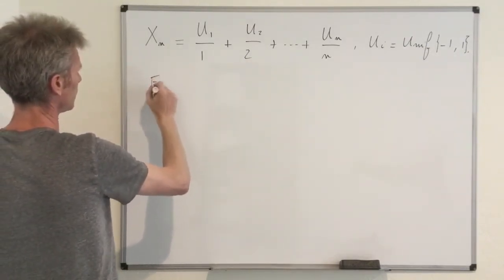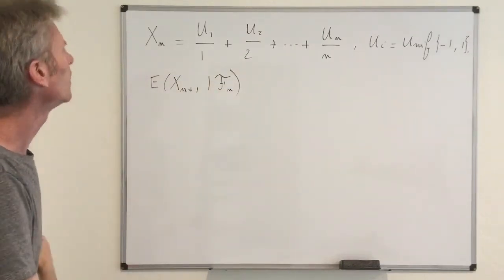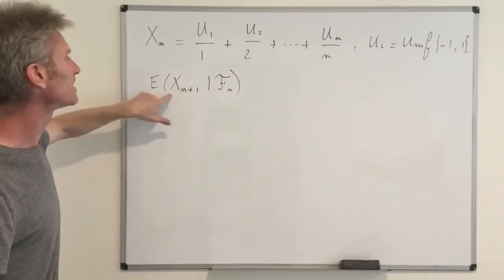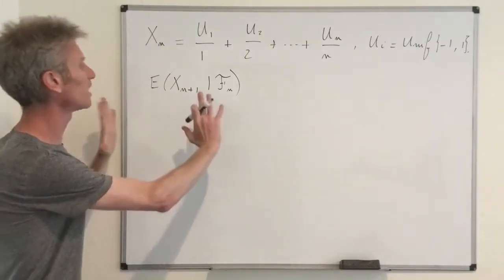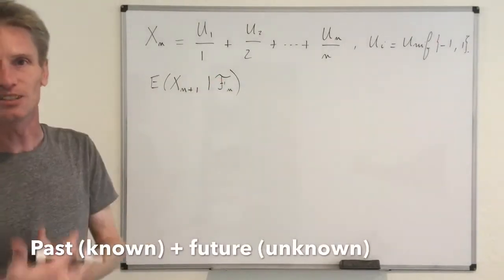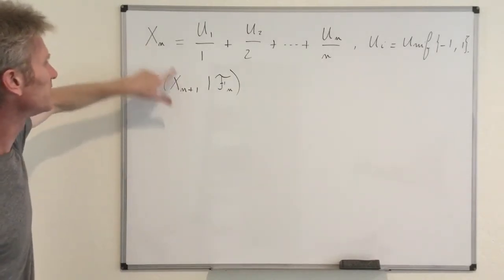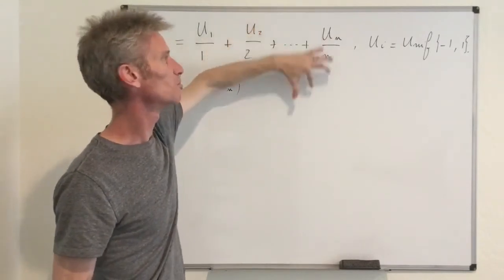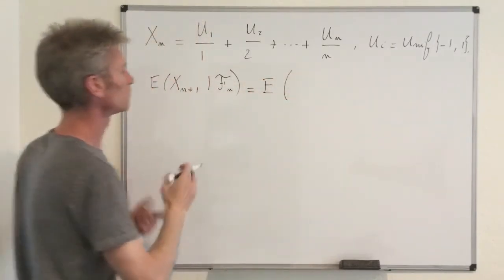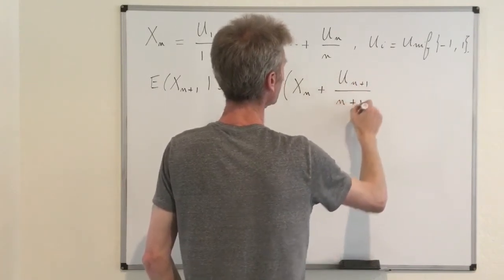We look at E[xn+1 | Fn] and want to prove this equals xn. We use the standard technique: xn+1 is not Fn-measurable, but it's not independent of Fn either. So we break it into two pieces — one piece that is Fn-measurable and one that is independent of Fn. Looking at xn+1, it's clear that xn+1 = xn + un+1/(n+1). This gives one piece in the past and one piece in the future: E[xn + un+1/(n+1) | Fn].